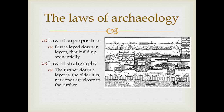There are a couple of laws in archaeology. The law of superposition states that dirt is laid down in layers sequentially — one layer on top of another. The law of stratigraphy states that the further down a layer is, the older it is, and newer layers are closer to the surface. So modern topsoil near the surface contains relatively recent material, while something like a Roman road found deep down is older than the topsoil, though exactly how old may not always be certain.